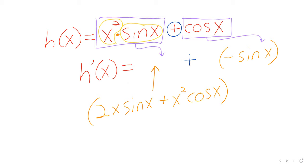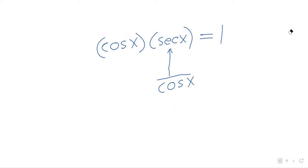We found h prime of x: 2x times the sine of x plus x squared times the cosine of x plus negative the sine of x, which is the same as minus the sine of x. And there's nothing to be done as far as simplifying this. We don't have any sine squared or cosine squared, so there's no hope for the Pythagorean identity. We're not multiplying trig functions, so there is no possibility that they'll cancel out.